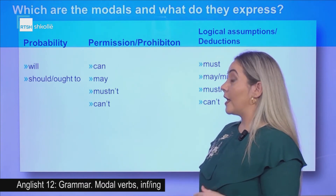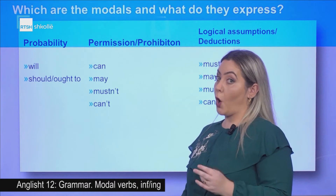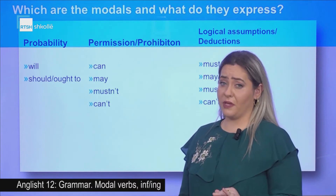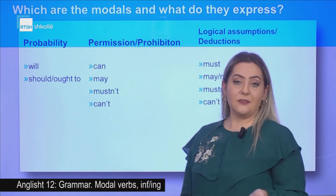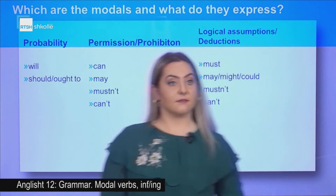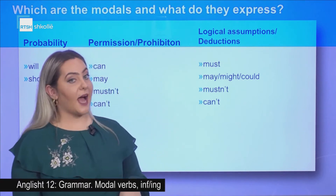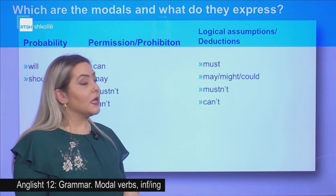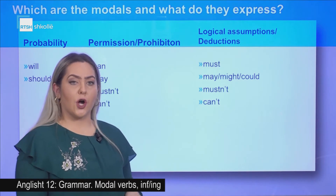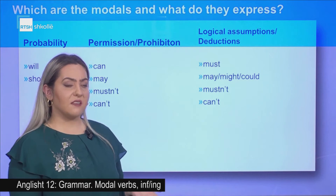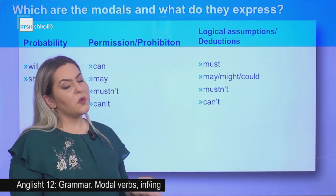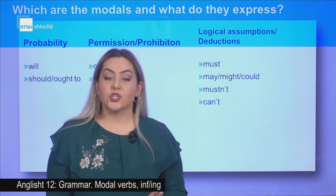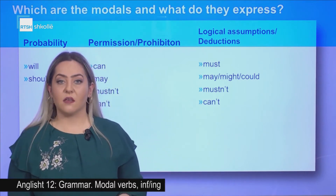Permission and prohibition: you can use 'can' and 'may' to give permission or to ask for permission. 'Mustn't' means that something is prohibited. 'Can't' means that something can't happen. Logical assumption and deductions: must, may, might, could, mustn't, and can't. If you use 'must', you are totally sure that something is the way you think it is. With 'may', 'might', or 'could', you think that something is the way it is. 'Mustn't' or 'can't' means you are totally sure that something can't be the way it is thought to be.